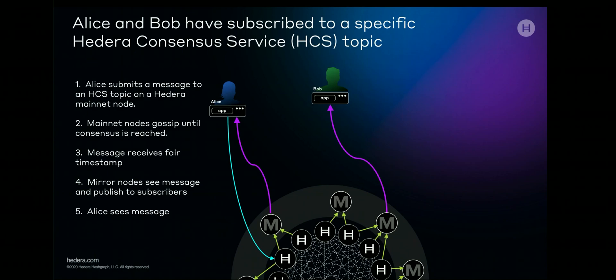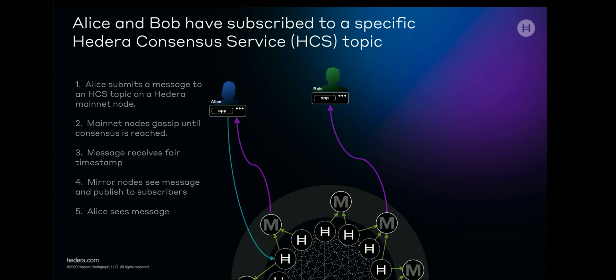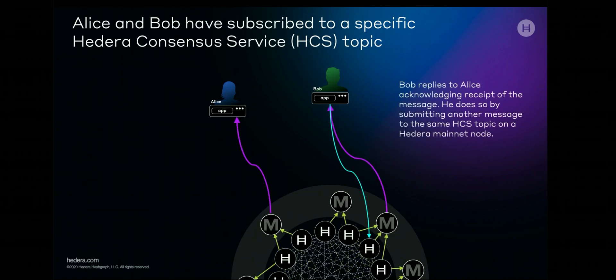This ensures the messages remain totally private over the public network. So we have secure private communication over a public network, together with a verifiable audit log with fair timestamping of private transactions. This is extremely powerful. Both Alice and Bob receive the message from a mirror node. When Alice receives the message, she knows that it has been timestamped by Hedera and consensus reached. When Bob receives the same message, he can act on it — but in this example he simply replies with an acknowledgement.